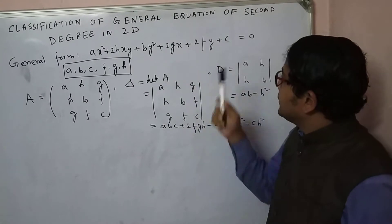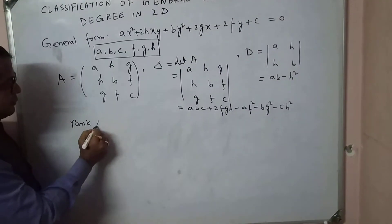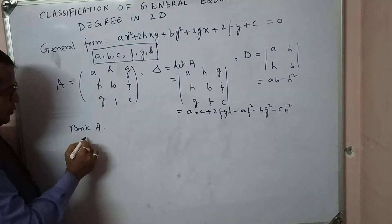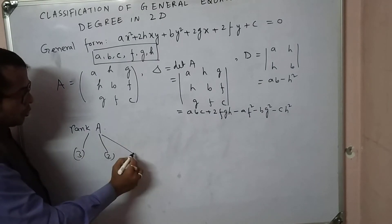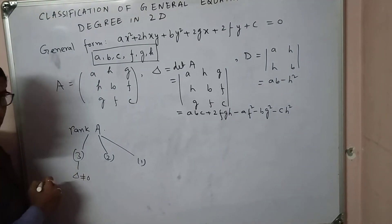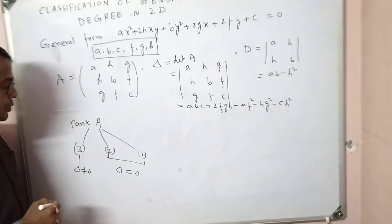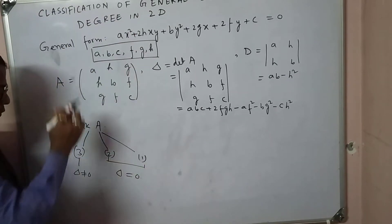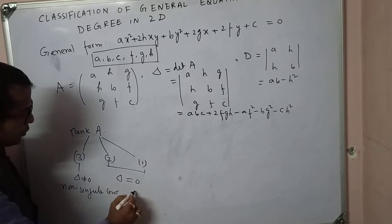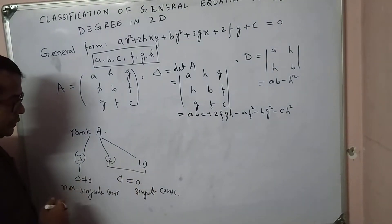To understand the nature of the conic, we classify into two broad segments by finding the rank of the matrix A. The rank of matrix A will be 3, 2, or 1. When the rank is 3 — that is, whenever its determinant delta is not equal to 0 — we call it a non-singular conic. When the rank is less than 3, we call it a singular conic.